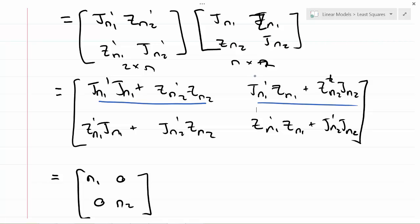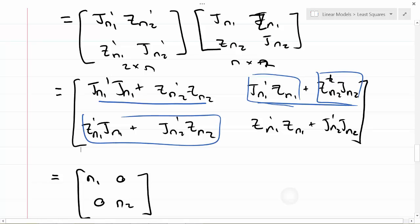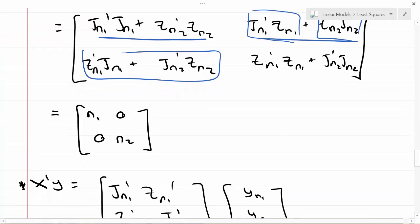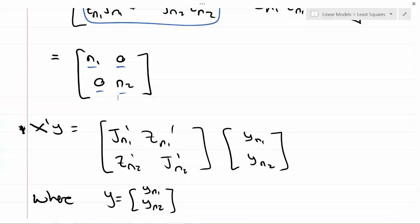But notice here, J_n transpose Z_n1, that's zero because Z_n1 is a vector of zeros. Same thing with that, that's zero because Z_n is a vector of zeros, and so on for this one. So we wind up with a diagonal matrix for x transpose x. We have zeros in the off diagonals, n_1 and n_2 in the diagonal matrices.